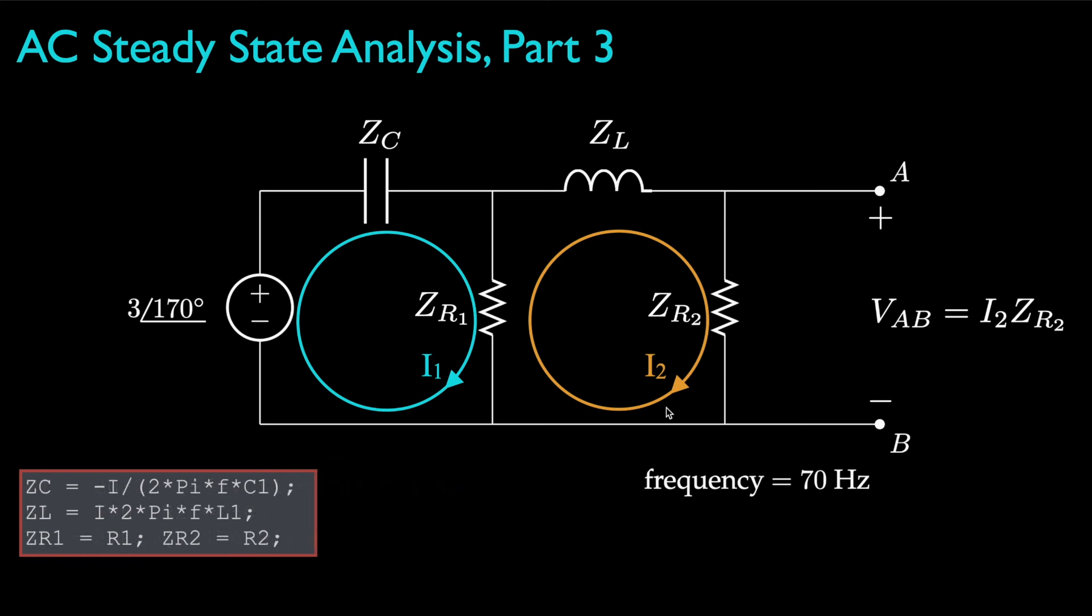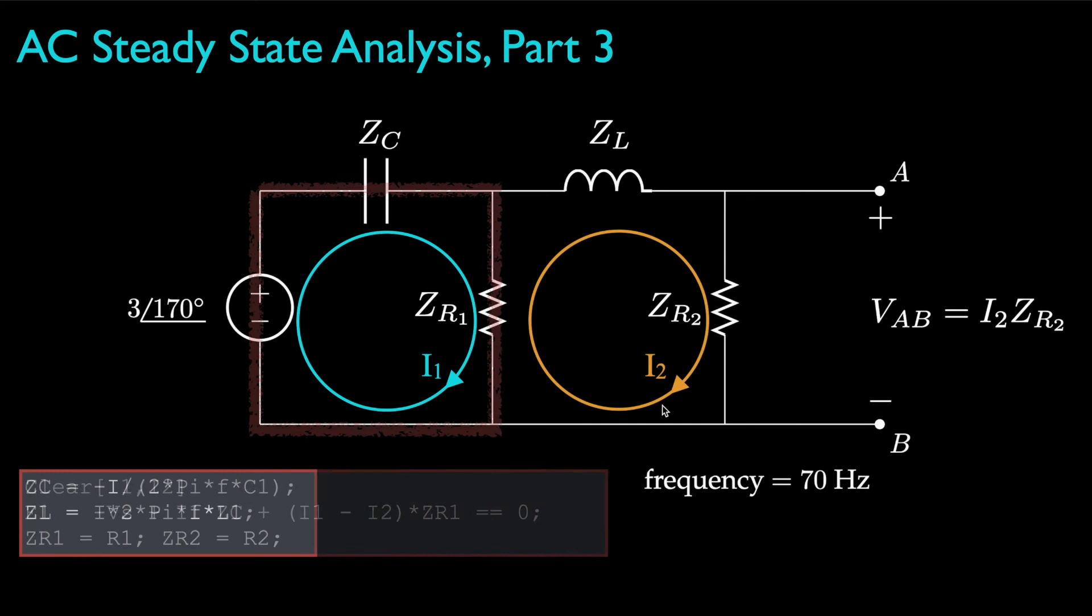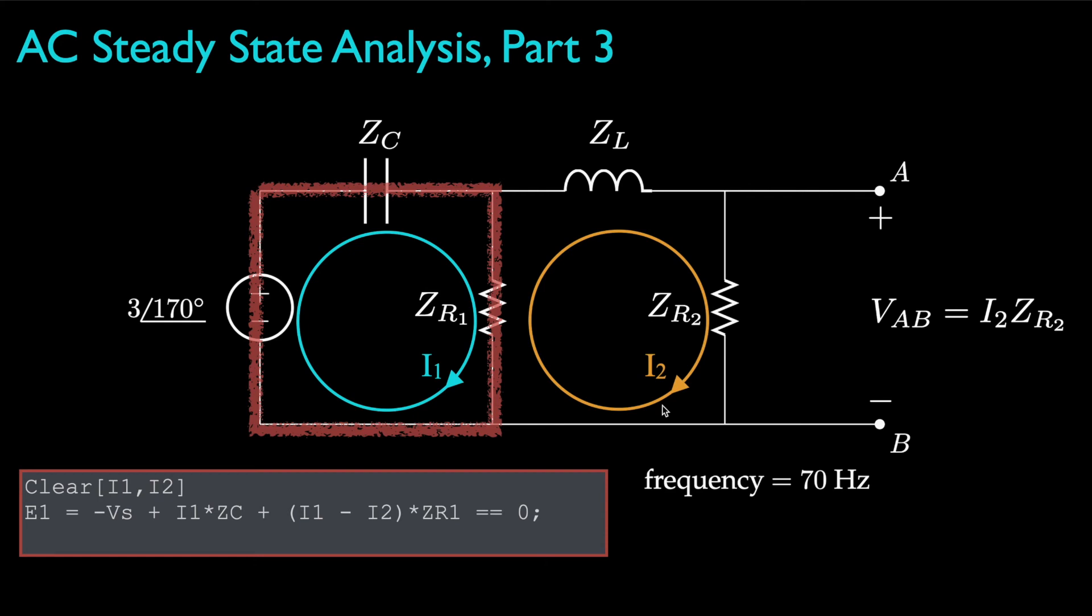Next, I use those values to set up the complex values for the impedances. And then, using the special notation within Mathematica, I'll write the two loop equations. For the first loop, the equation is negative Vs plus I1 times the impedance for the capacitor, plus I1 minus I2 times the impedance for the first resistor, and I set all of that equal to zero.